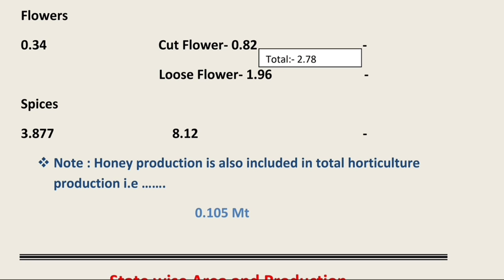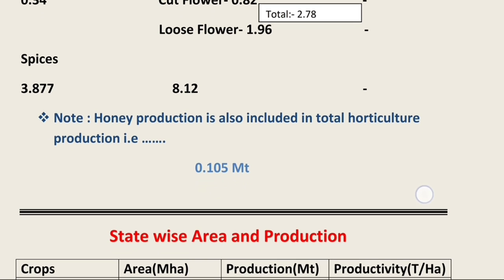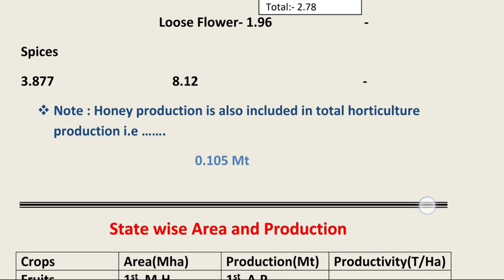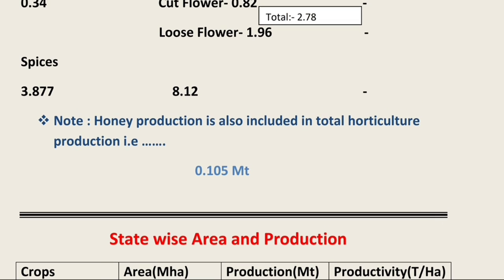Breaking down flower production: cut flowers account for 0.82 million ton and loose flowers account for 1.96 million ton production in 2018. In terms of spices, the total area covered by spices is 3.87 million hectare and total production is 8.12 million ton.